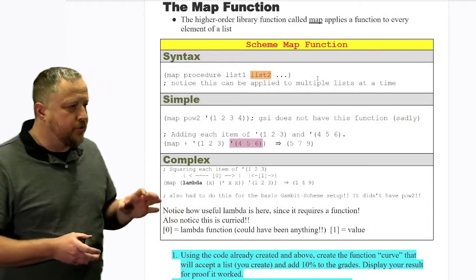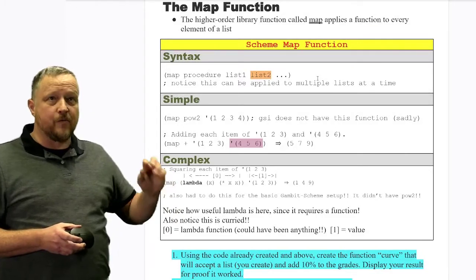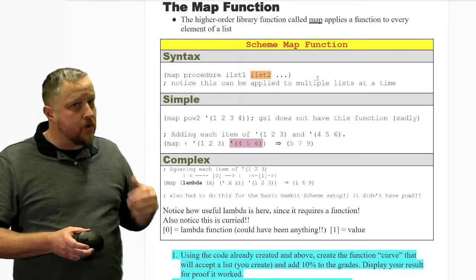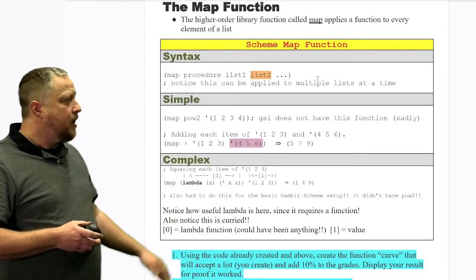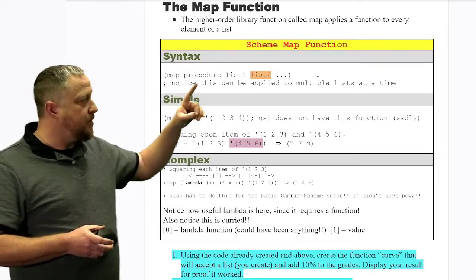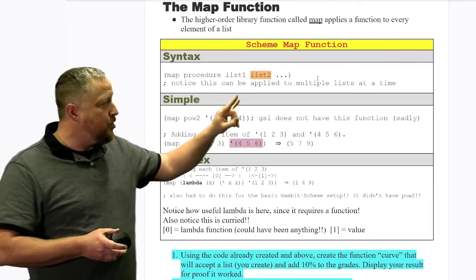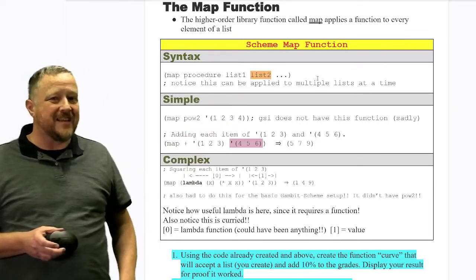Now we're going to go over some of the very specific higher-order functions that require another function in order to do their job. For a map, you're given the map keyword, but then you need a procedure of what you want to do and usually one or more lists for what you want to apply or map to that list.